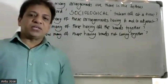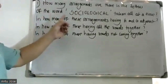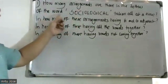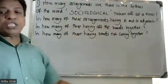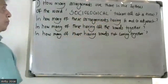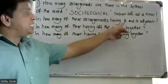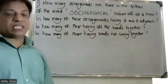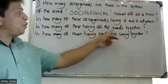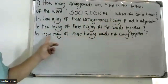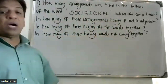Good morning students. How many arrangements are there in the letters of the word SOCIOLOGICAL, taken all at a time? In how many of these arrangements are A and G adjacent? In how many of these are all the vowels together? In how many of these are vowels not coming together?